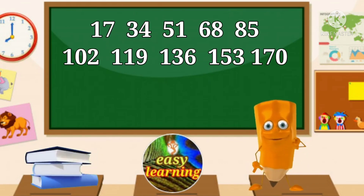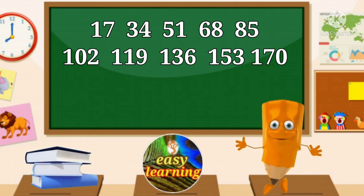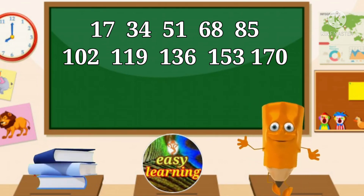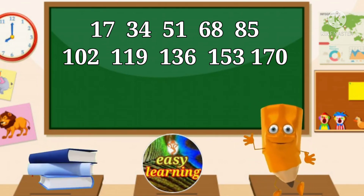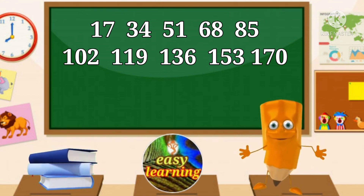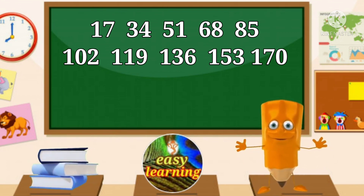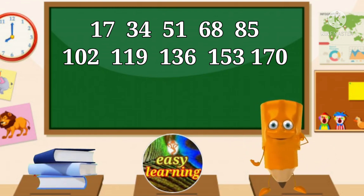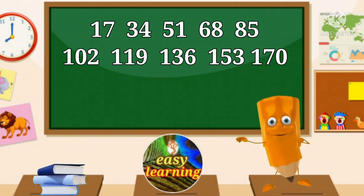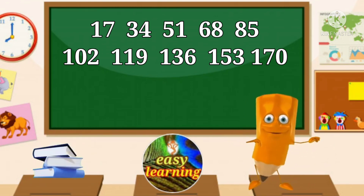17 ones are 17. 17 twos are 34. 17 threes are 51. 17 fours are 68. 17 fives are 85. 17 sixes are 102.